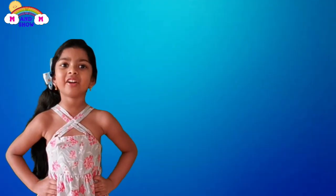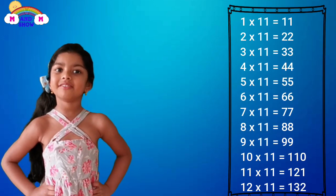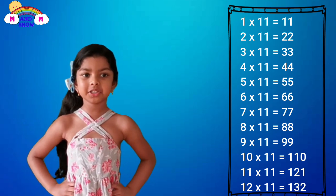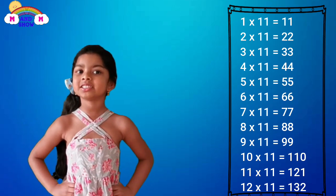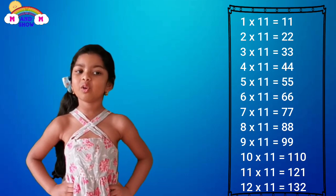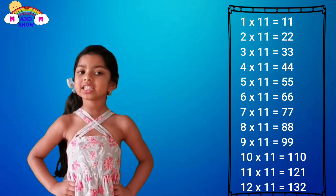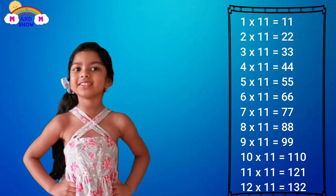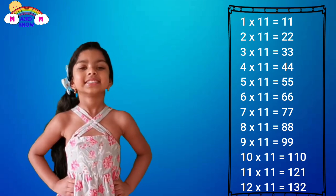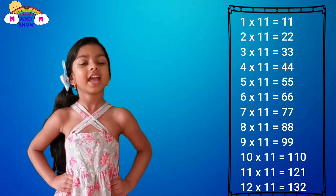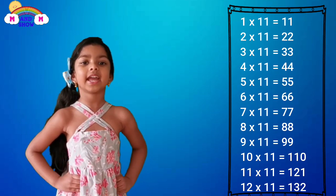Okay guys, now it's time for the 11 timetable. 1 x 11 is 11, 2 x 11 is 22, 3 x 11 is 33, 4 x 11 is 44, 5 x 11 is 55, 6 x 11 is 66, 7 x 11 is 77, 8 x 11 is 88.